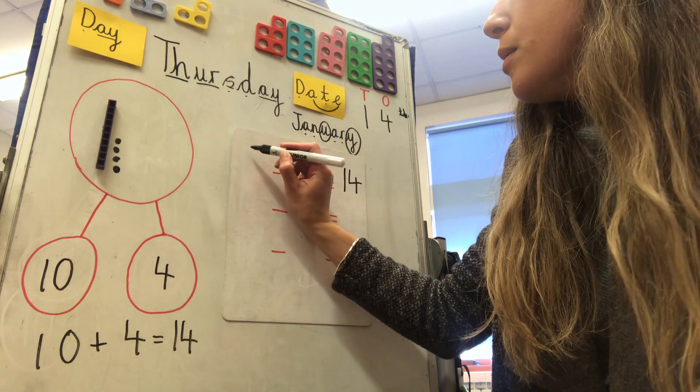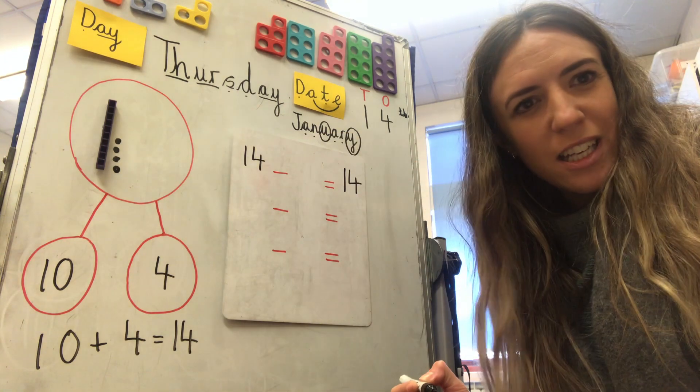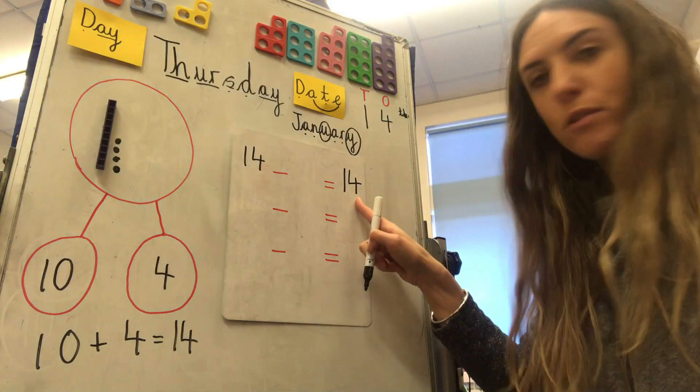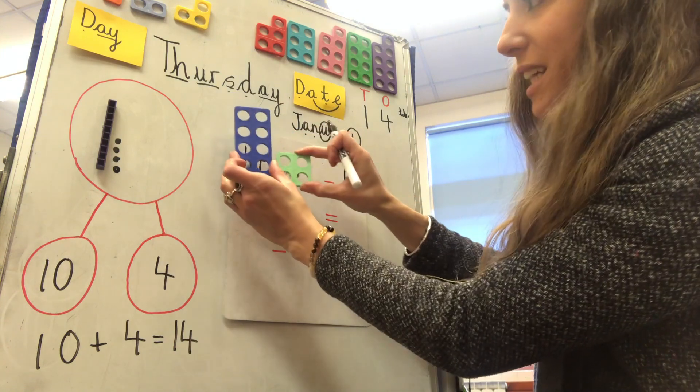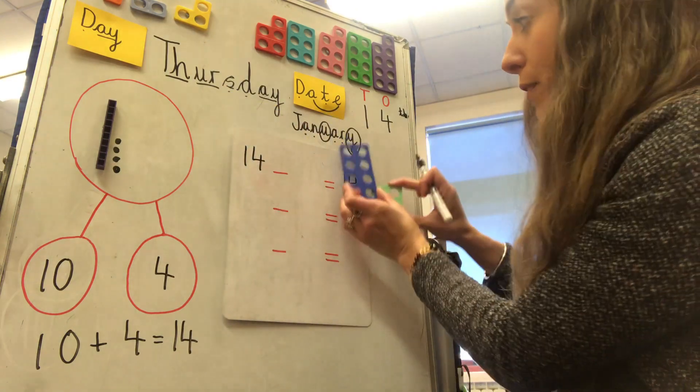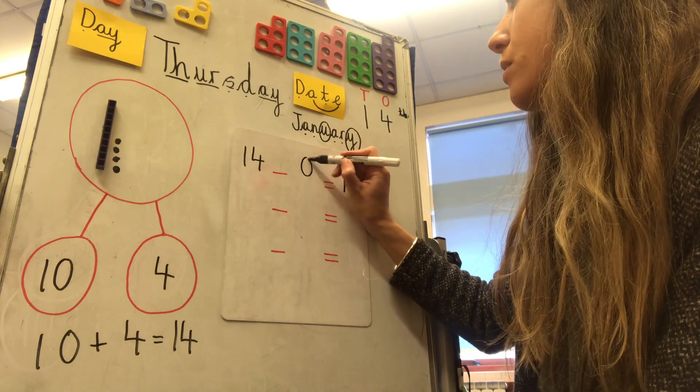So, I'm going to start with fourteen. Fourteen take away. How many? Can I take any away if I want to have fourteen left? I can't, can I? If I've got fourteen and I still want to have fourteen, I can't take any away. So, that's zero. Okay.